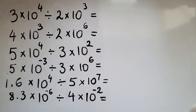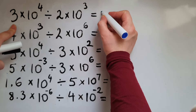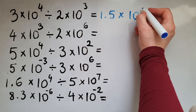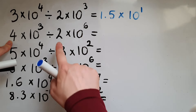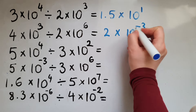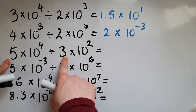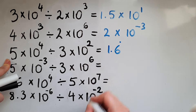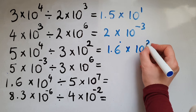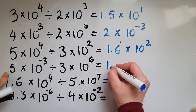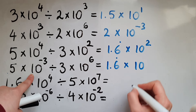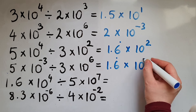Now looking at division: we've got 3 times 10 to the power of 4 divided by 2 times 10 to the power of 3. We do 3 divided by 2 first, which is 1.5, times 10 to the power of 4 take away 3, which is 1. Looking at the next one: 4 divided by 2 is 2, times 10 to the power of 3 take away 6, which gives us negative 3. Then 5 divided by 3 gives us 1.6 recurring, times 10 to the power of 4 take away 2, which gives us 2. And 5 divided by 3 again is 1.6 recurring, times 10 to the power of negative 3 take away 6, which gives us negative 9.